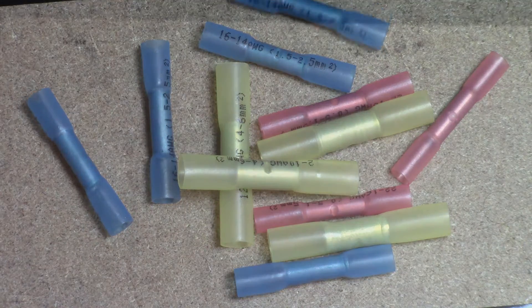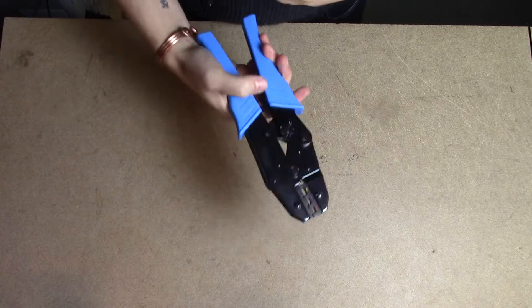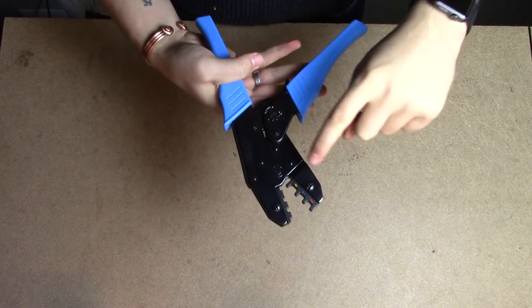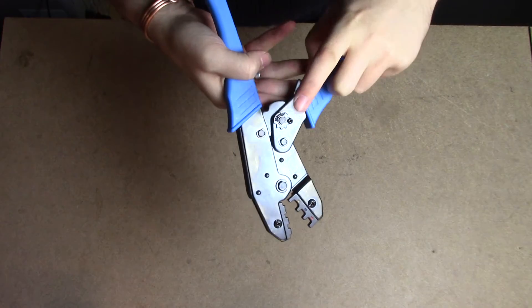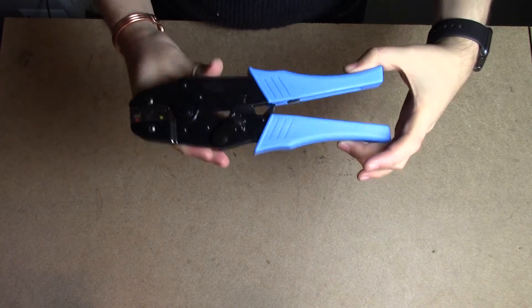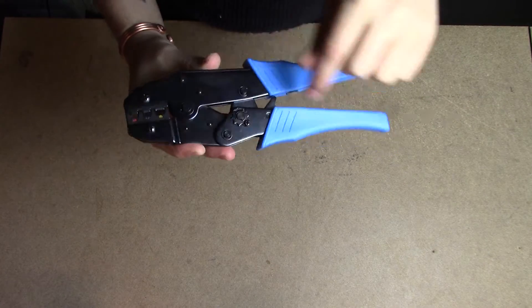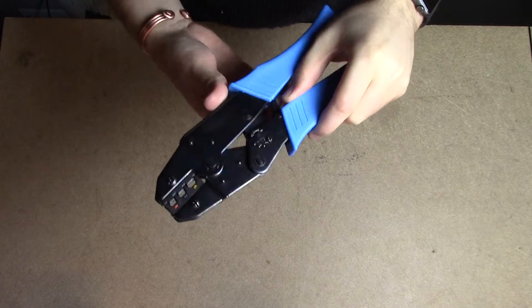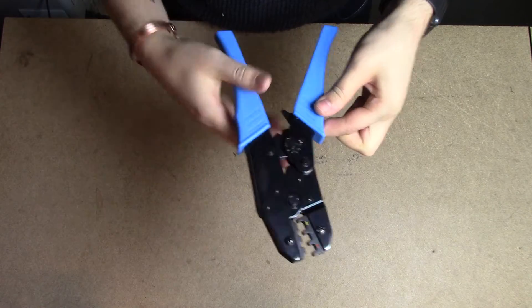Right, now what we're going to do is introduce our first tool, which is our heat shrink terminal ratchet crimping tool. Now this has got black dies just to help protect that heat shrink sleeve, and it's also got a ratchet system which will not allow you to release until the crimp has been fully applied to the terminal.